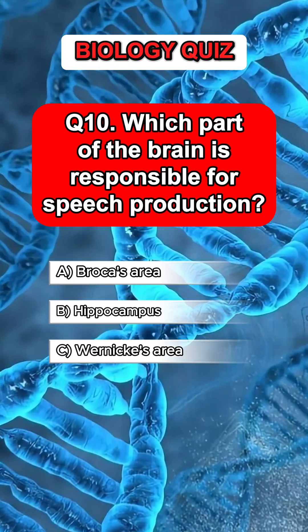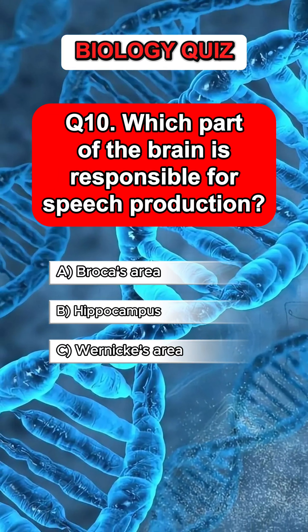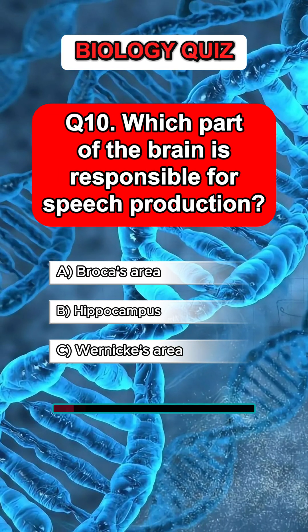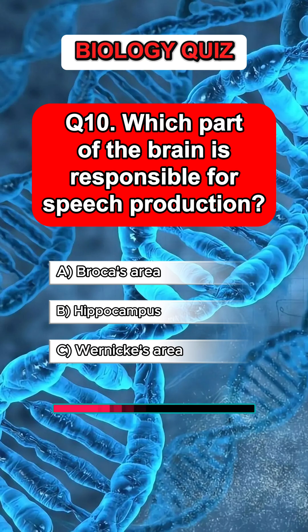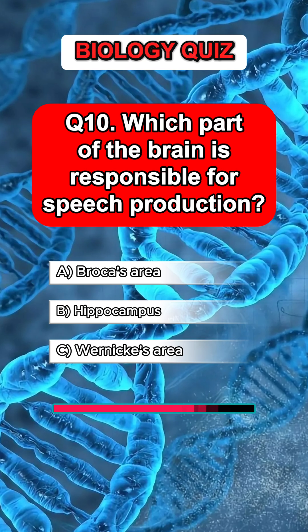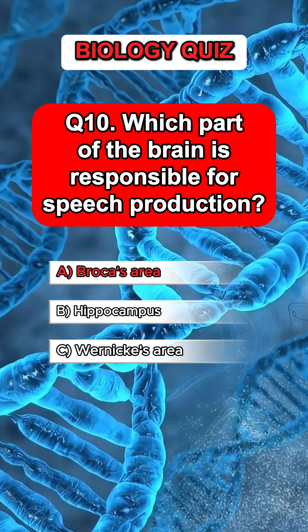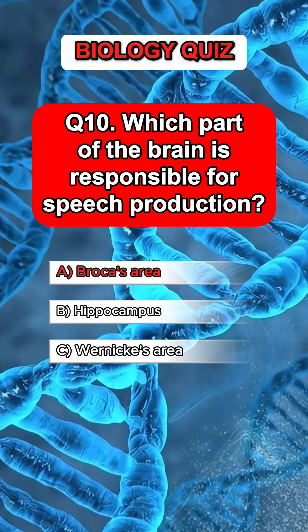Question 10. Which part of the brain is responsible for speech production? Answer A. Broca's area.